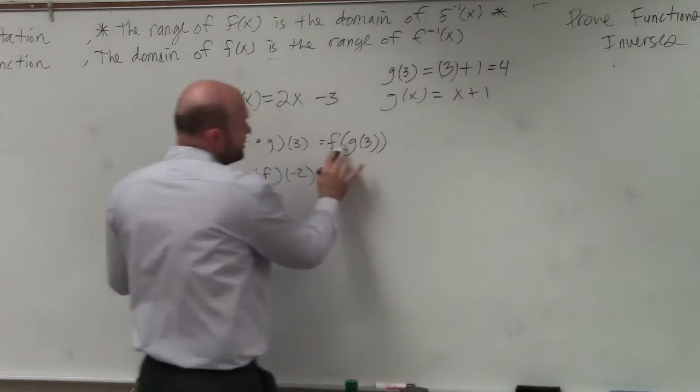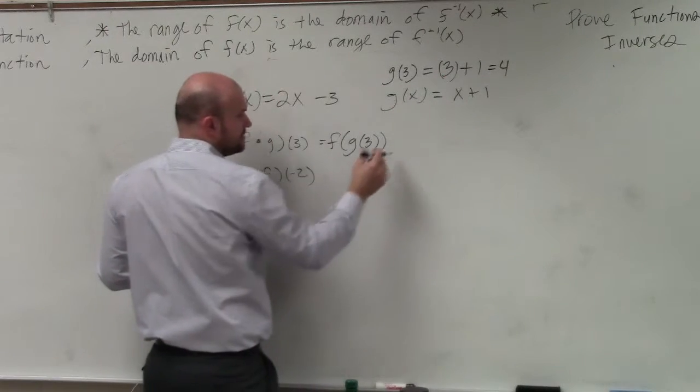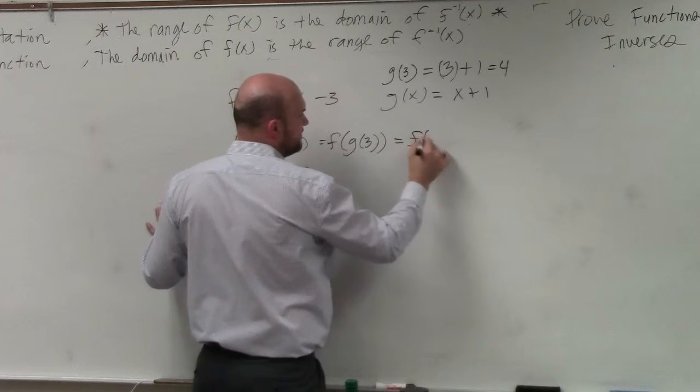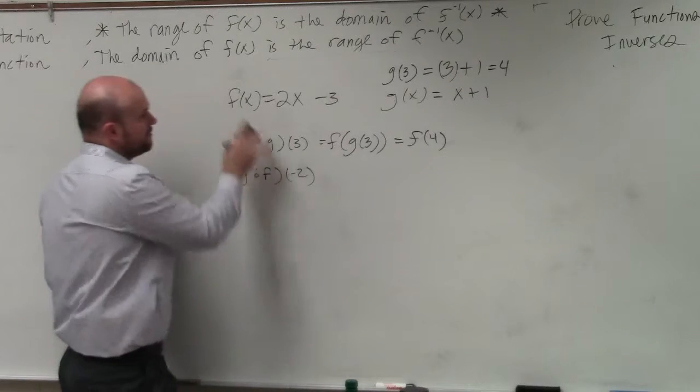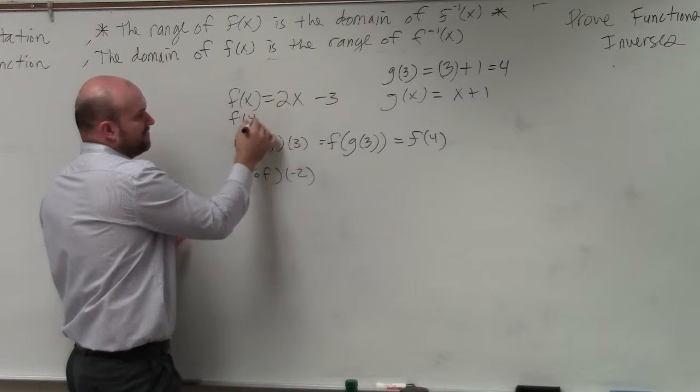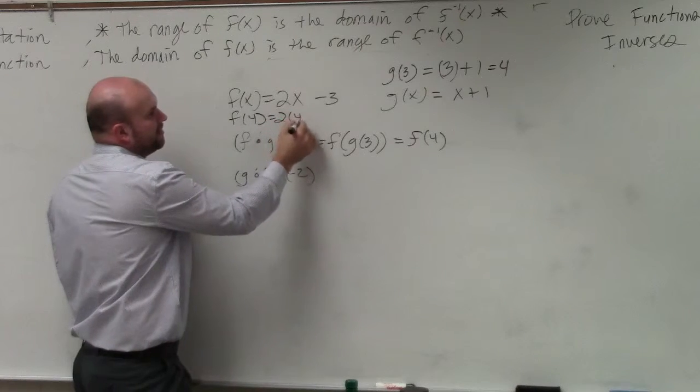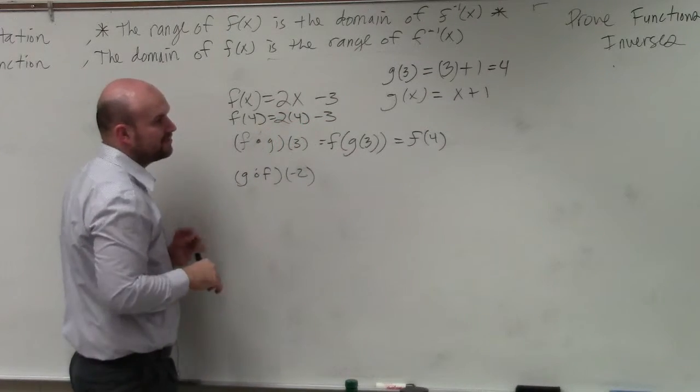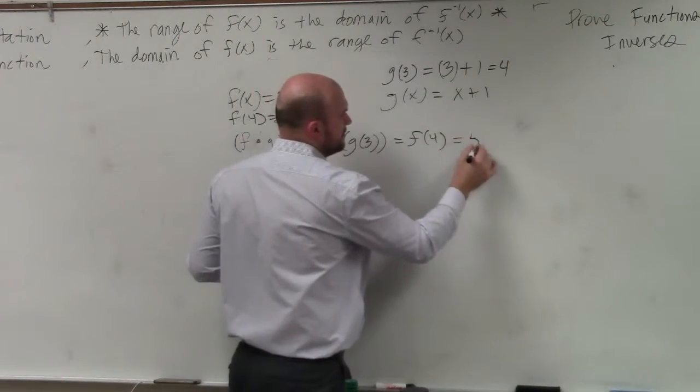Therefore, g of 3 is equal to 4. So now I can replace that with f of 4. Well, we know f of x is 2x minus 3. So f of 4 is 2 times 4 minus 3. 2 times 4 is 8, minus 3 is 5.